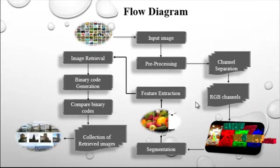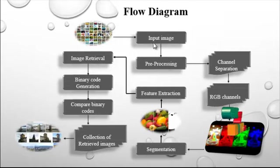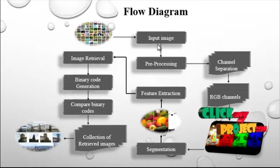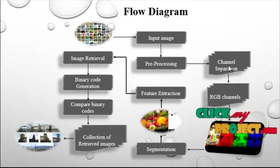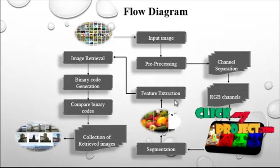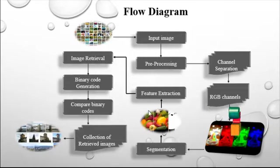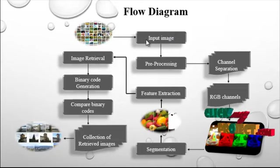Now let's see the flow diagram of the project. The flow diagram consists of several stages. First, from the dataset we get the input images, then the pre-processing stage is performed, followed by the channel separation stage. After that, segmentation is processed. From segmentation we get the feature extractions, the images are retrieved, binary codes are generated, and finally the retrieved images are collected.